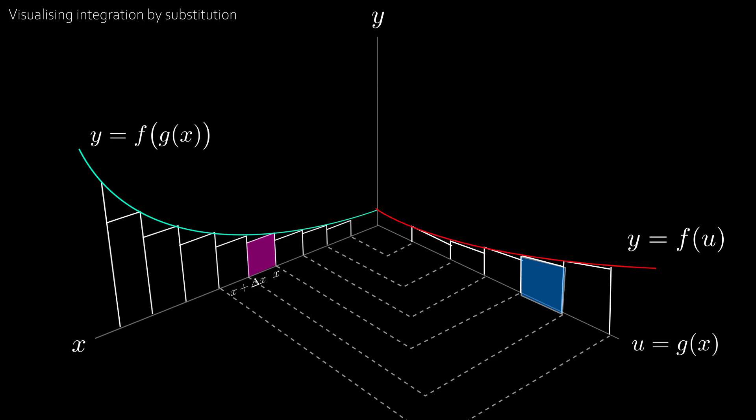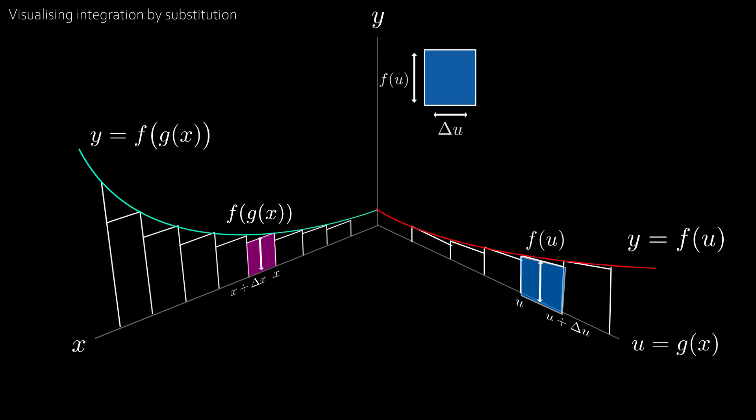The blue area here corresponds to the transformation of the pink area, and the blue area lies between g of x or u and u plus delta u. Remember the y coordinates stay the same, so the height of the blue rectangle is the same as the height of the pink rectangle. Only the widths have changed. So the blue rectangle has area f of u times delta u. If we make the blue strip's width as small as possible, then the width becomes du.